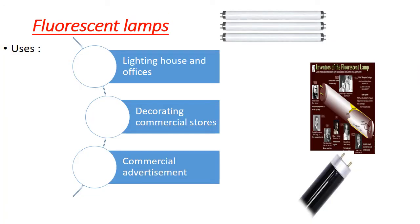Number two in the electric lamp is called the fluorescent lamp. The uses of fluorescent lamp: number one, lighting houses, offices, and schools; number two, decorating commercial stores; number three, used in commercial advertisement.